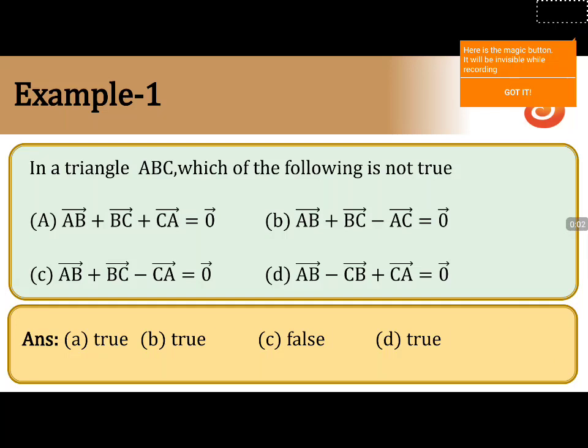Let me explain a problem based on triangle ABC: which of the following is not true? There are four options to check. The first option is AB vector plus BC vector plus CA vector equals 0. The second is AB vector plus BC vector minus AC vector equals 0. The third is AB vector plus BC vector minus CA vector equals 0. The fourth is AB vector minus CB vector plus CA vector equals 0.